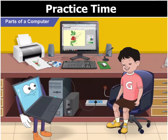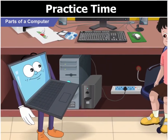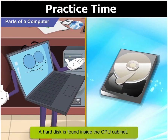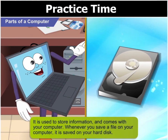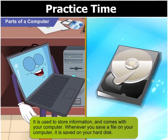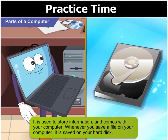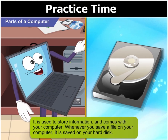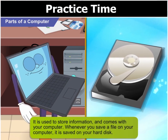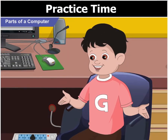I have heard my teacher talk about the hard disk. What are they? A hard disk is found inside the CPU cabinet. It is used to store information and comes with your computer. You cannot see it unless you open the CPU cabinet, but whenever you save a file on your computer, it is saved on your hard disk.